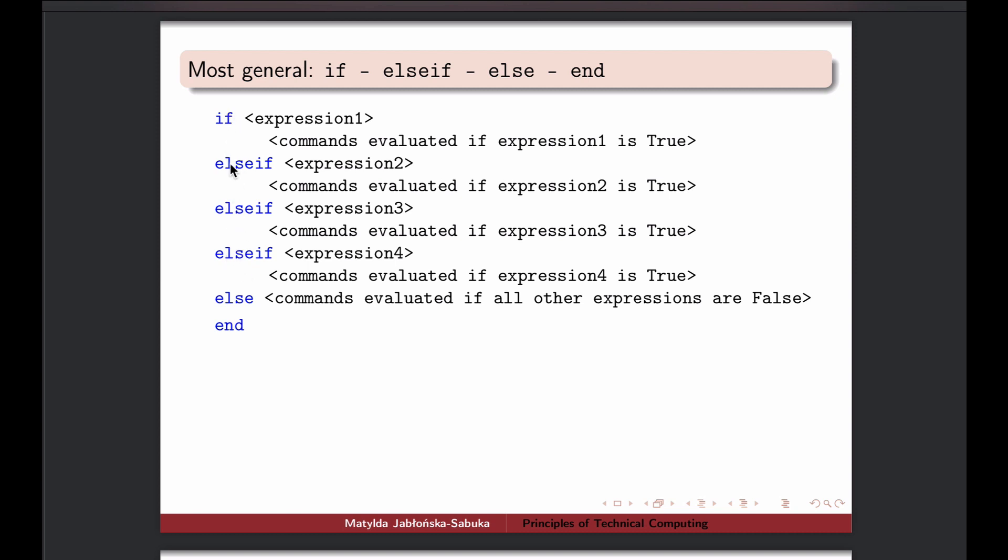If every else if, so if and all those else ifs are false, then it will end on else in this case. But it could also be that this else is not there. You don't need an else, it really depends on the task you're doing.